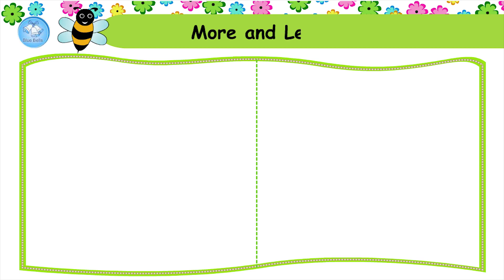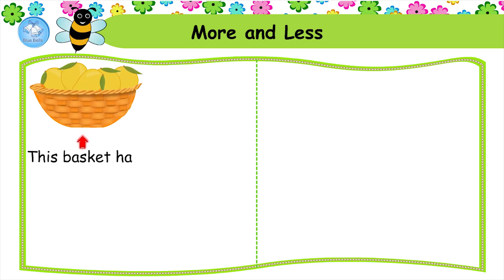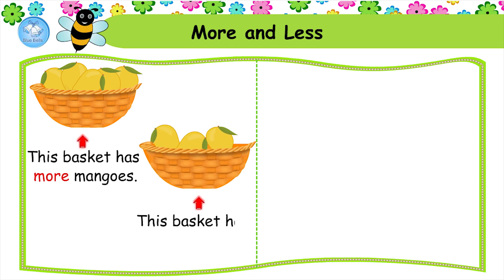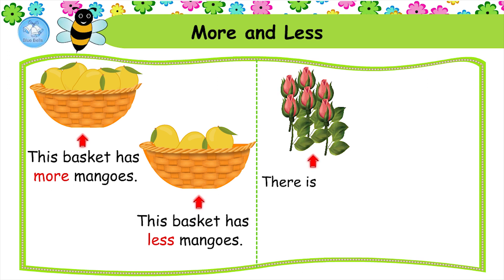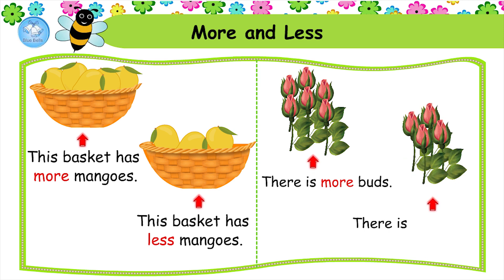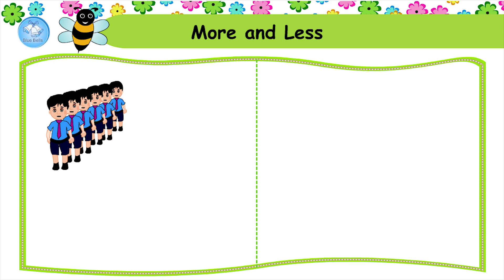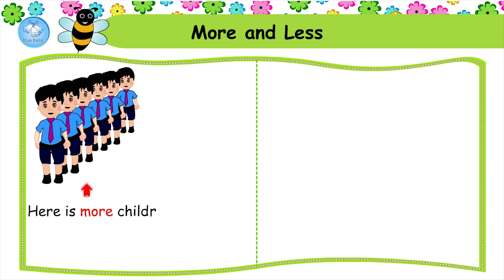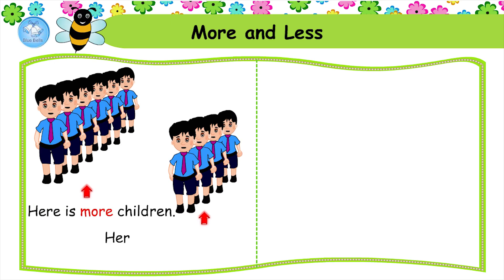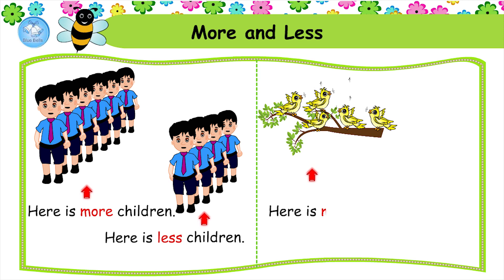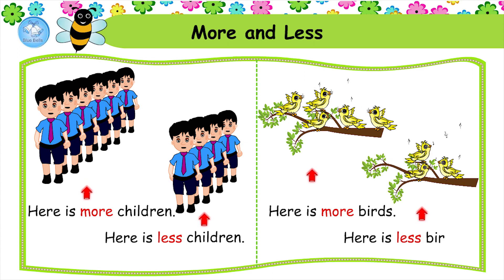More and less. This basket has more mangoes. This basket has less mangoes. There are more birds. There are less birds. Here are more children. Here are less children. Here are more birds. Here are less birds.